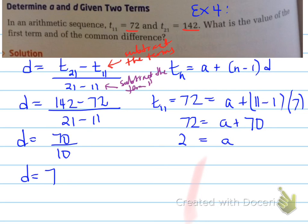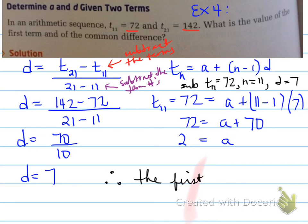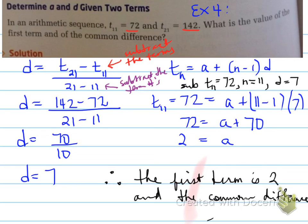So our a value is 2 and our d value is 7. In the numerator we subtracted the actual term values; on the bottom we subtracted the term numbers to find d. Then we plugged in T11 = 72 to find a. Those are the answers. That's all — good luck and take care.